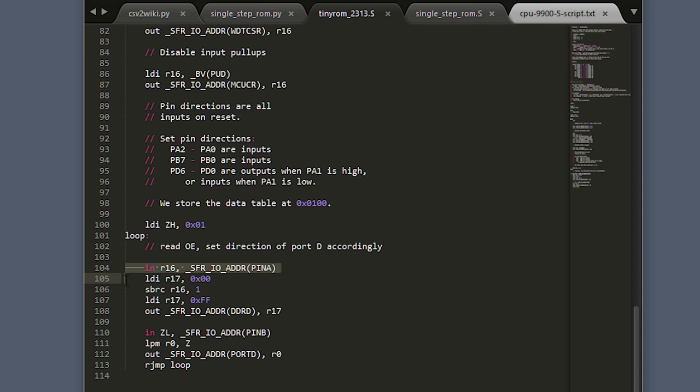First we check the output enable line, and change the direction of port D accordingly. To disable the output, this means setting port D as inputs, which puts it in high impedance mode. Then we just read the address lines at port B, pull the data from that address plus hex 100, and put the data on the data lines at port D.